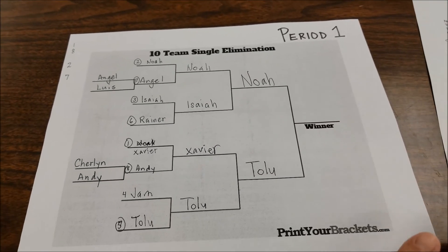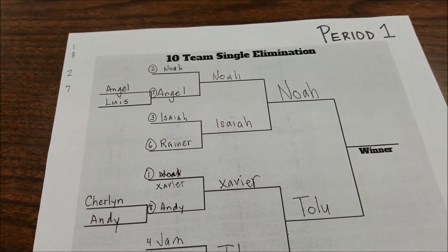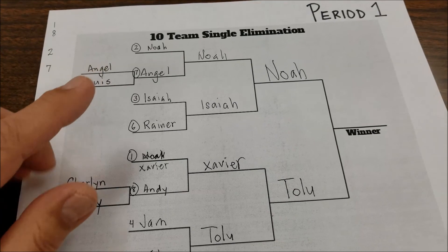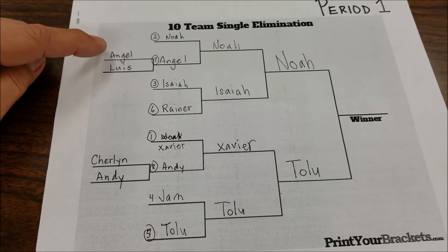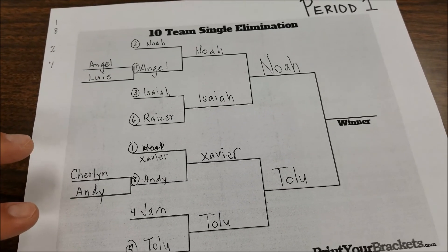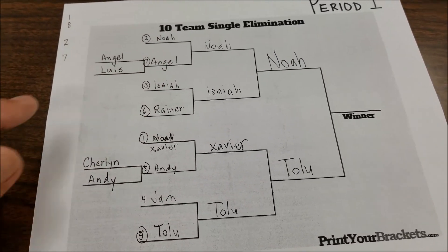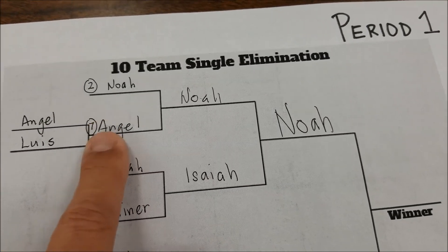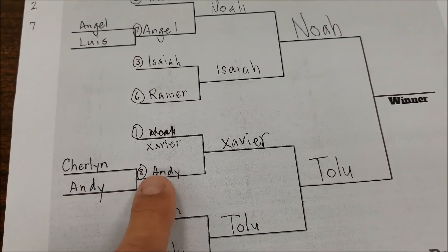Let me show you what the brackets look like for 10 teams. All I did was Google '10 team single elimination.' I also have a low-enrollment period with only five teams, so we did a five-team single elimination. In this bracket, I took the four lowest teams — seeds seven, eight, nine, and ten — and basically they had to win to enter the tournament of eight. So as soon as Angel's team won, they became the seven seed, and when Andy's team won, they became the number eight seed.